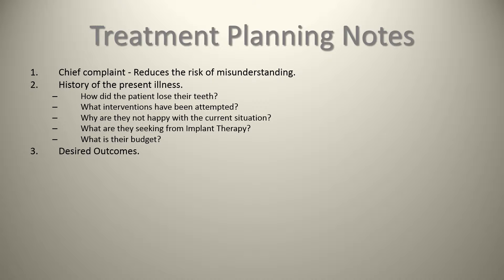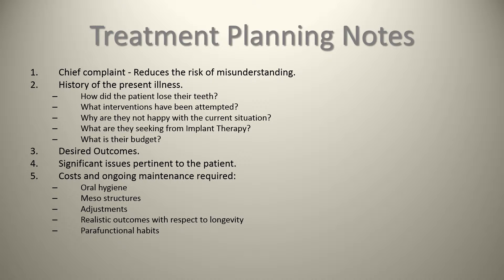Number three, talk to patients about their desired outcome — what is their desired end state? Number four, deal with any significant issues pertinent to the patient. For example, I had a patient whose daughter was getting married two weeks after a procedure, so you need to understand the patient's timeline. Number five, record costs and ongoing maintenance requirements — oral hygiene, mesostructures such as male and female Zest anchor components, abutments that may need changing, adjustment costs, realistic prosthesis longevity, and parafunctional habit management.